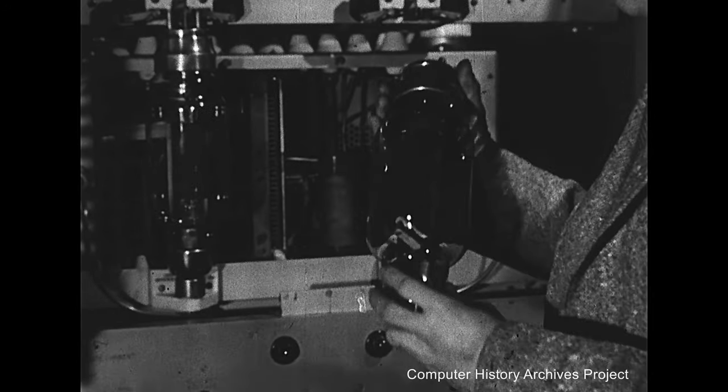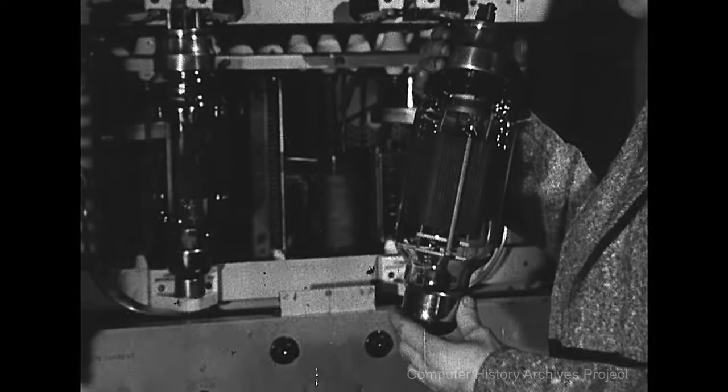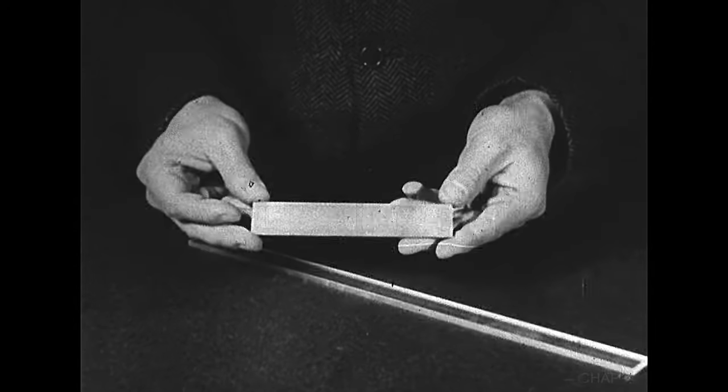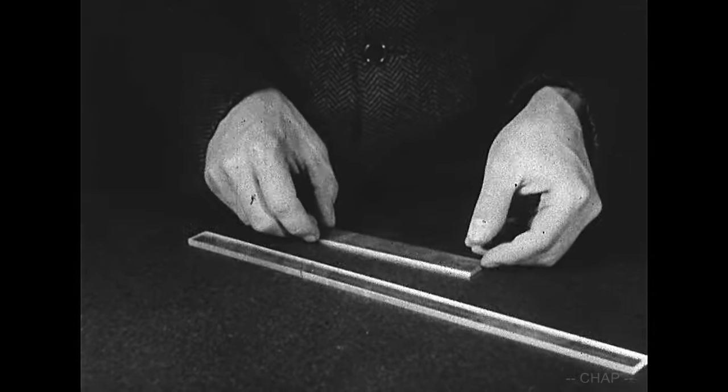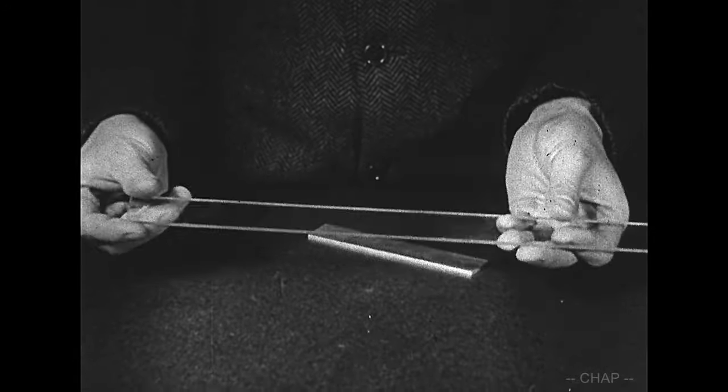Its effective utilization demands an understanding of the scientific principles made use of in the vacuum tube. Some materials, such as copper, conduct electricity and are known as conductors. Others, glass for example, do not readily conduct electricity and are known as insulators.